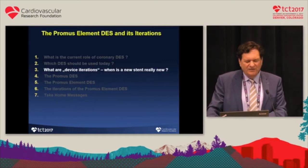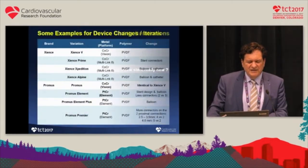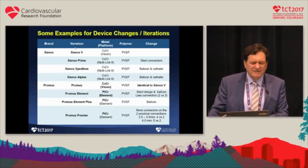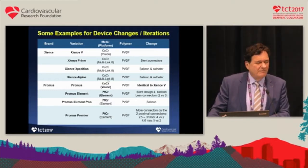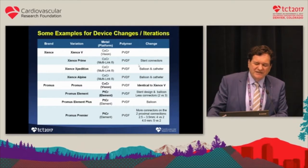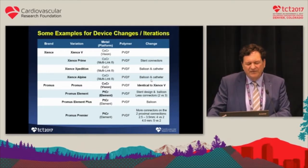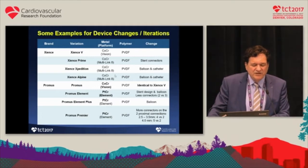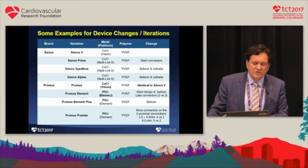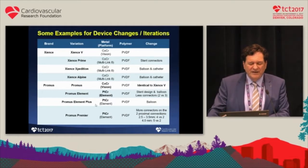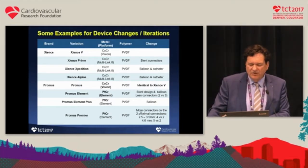What are device iterations, and when is a new stent really new? As examples of device iterations, modifications of the Xion stent started with the Xion V, then the Prime, the Expedition, and now the Alpine — but they all have the same metallic platform, the same polymer, and just little changes in the balloon and catheter. These are not really major modifications. But a major step forward was from PROMOS to PROMOS element — PROMOS and Xcience were the same stent, but the PROMOS element went from cobalt chromium to platinum chromium.